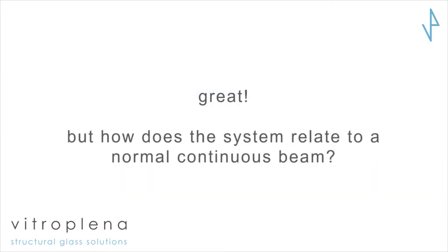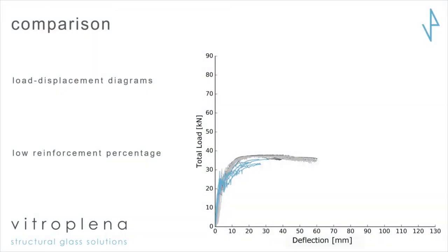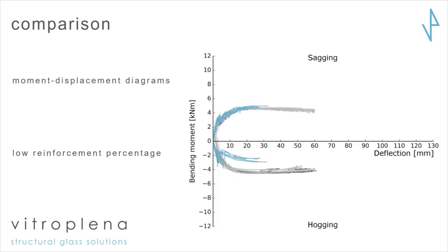How does the system really relate to a continuous beam without that connection? We made a comparison. For the hollow reinforced — low reinforcement percentage — it's almost quite the same. The only difference is it goes a little bit lower than the continuous one. The blue ones are the connected beams. If you look at the bending moment, at the hogging moment where the connection is at the central support, due to the lower stiffness of our resin, we have redistribution to the spans. But of course there is some weakness and therefore the load is a little bit lower.